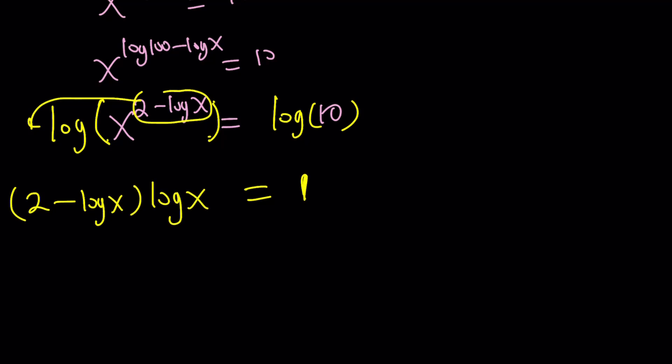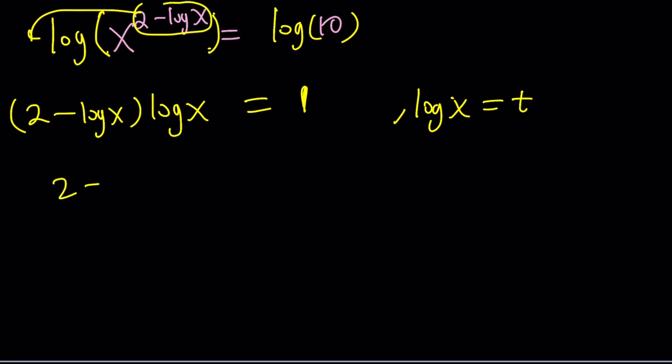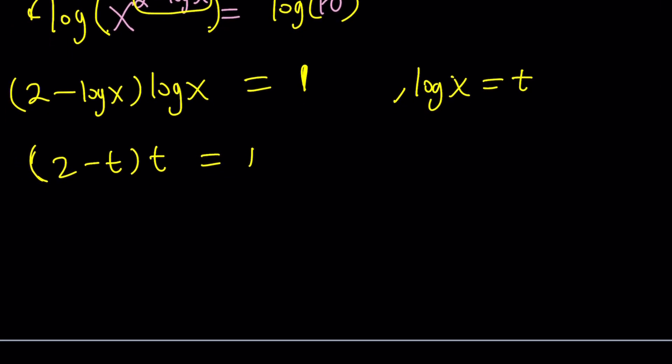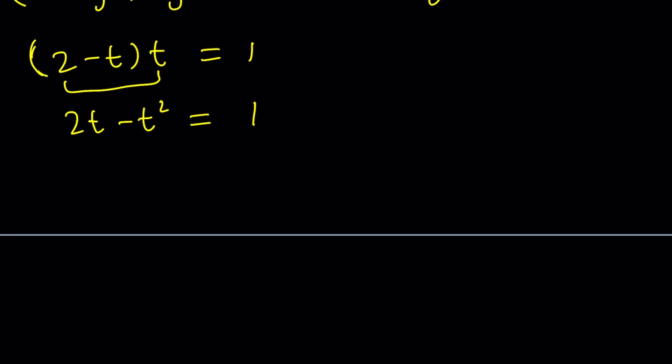This is great because we have log x twice. So let's do a quick substitution. Let's call that t. Then we get 2 minus t times t equals 1. That's 2t minus t squared equals 1. Put everything on the same side and you get t squared minus 2t plus 1 equals 0. This is very nice because this is a perfect square.